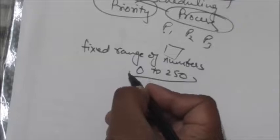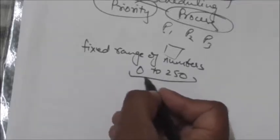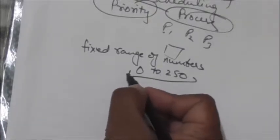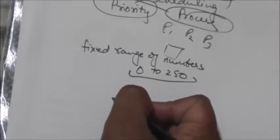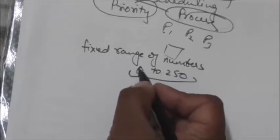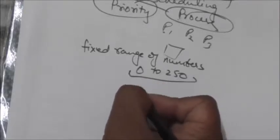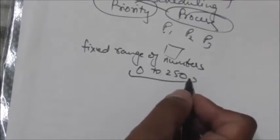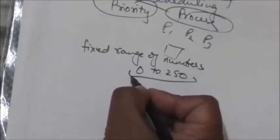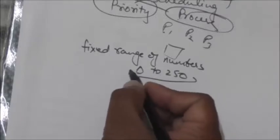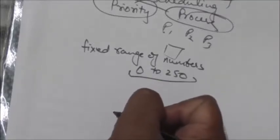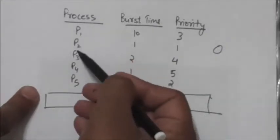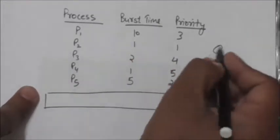If the priorities are indicated by a range of 0 to 250, and the system uses low numbers for low priority, then the process with priority 0 has the lowest priority. In a system where low numbers represent high priority, the process with priority 0 has the highest priority. Now consider five processes P1, P2, P3, P4, and P5, all arriving at time 0.